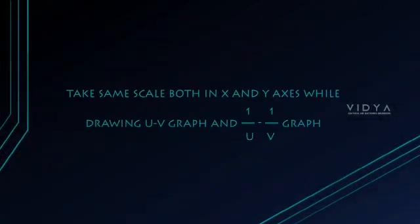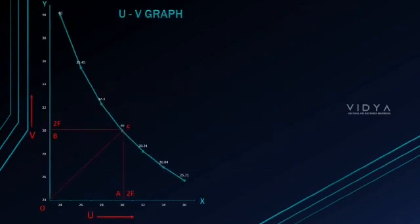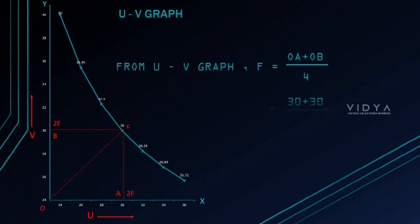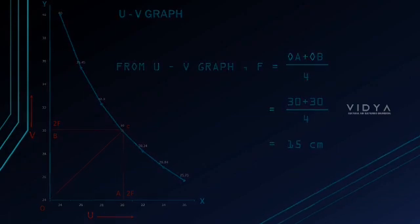Now, plot a UV graph with u on the x-axis and v on the y-axis, and calculate the focal length from the graph. It is obtained as 15 cm.